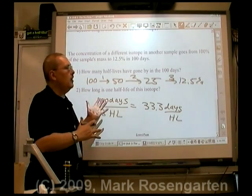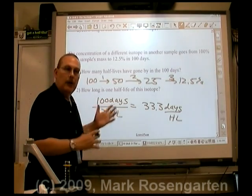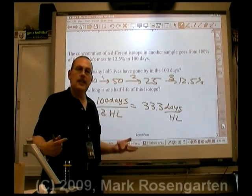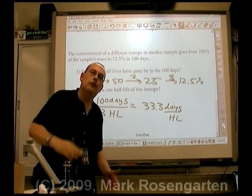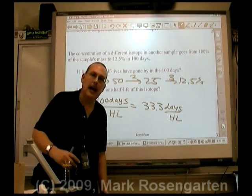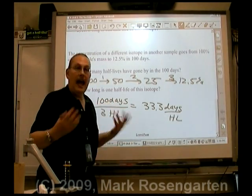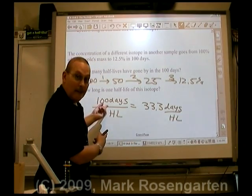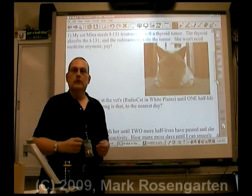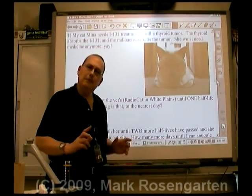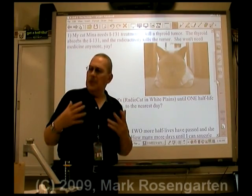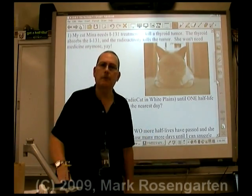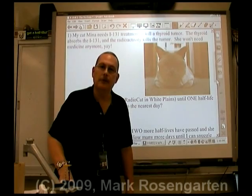By taking your radioactive sample and putting it under a Geiger counter, you can actually see what happens to your radioactivity over a period of time, and figure out how long the half-life is. You can also use half-life to make predictions about how much you'll have at a certain point in the future.